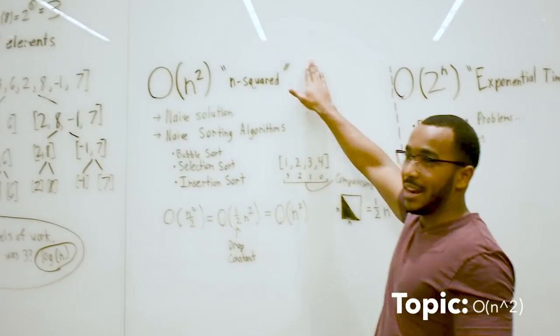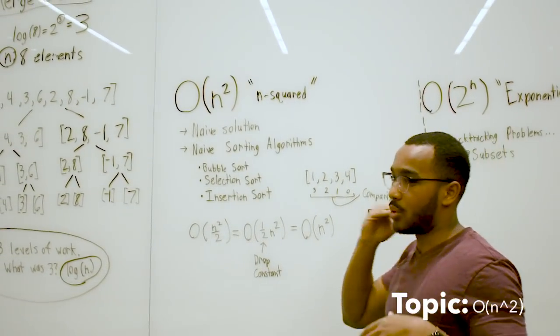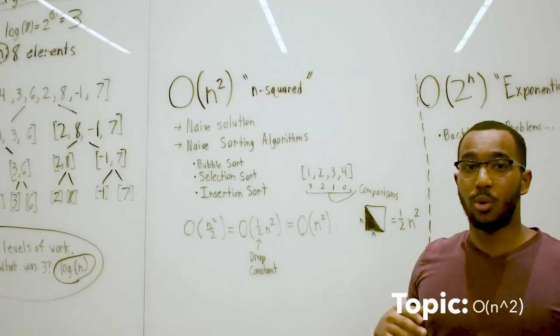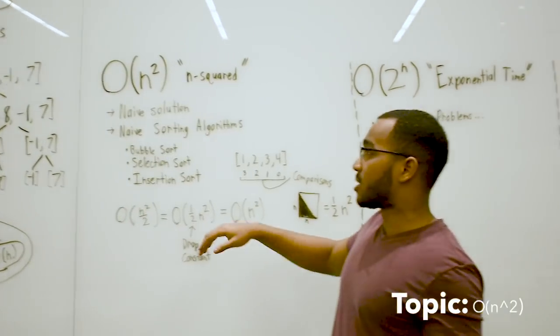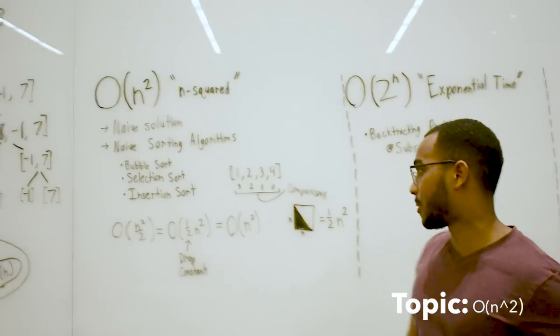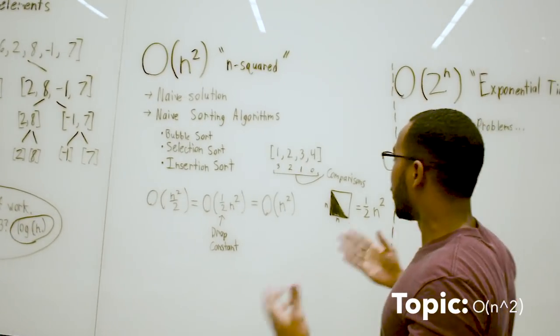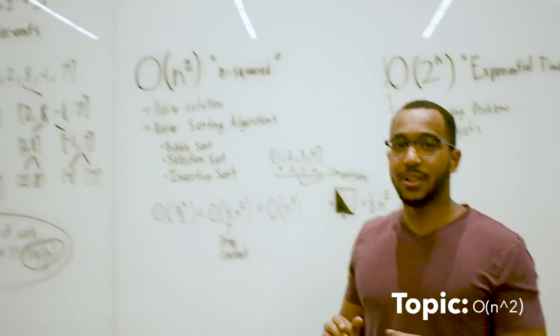Next we have n squared. Anytime you see n squared, it's always going to be probably the first naive solution to a problem. It's going to be our more naive sorting algorithms like bubble sort, selection sort, insertion sort.